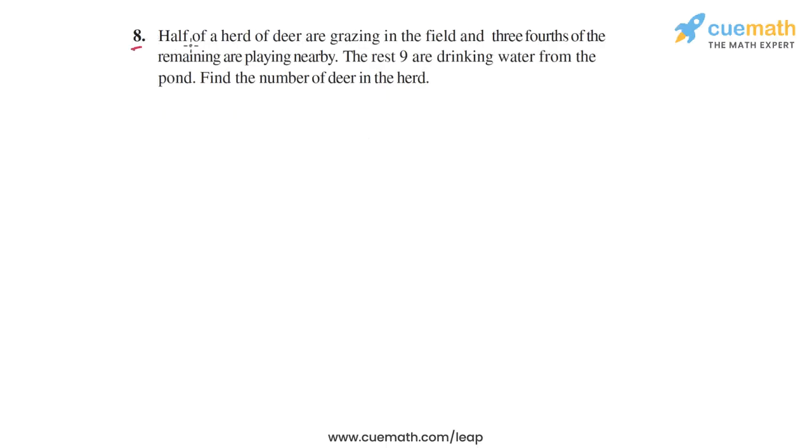Question 8 says that half of a herd of deer are grazing in the field and three-fourths of the remaining are playing nearby. The rest, nine, are drinking water from the pond. Find the number of deer in the herd.